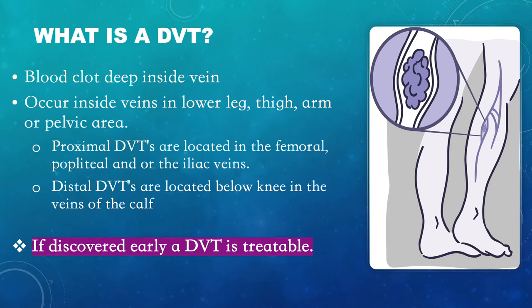If it is not treated, a DVT can dislodge from its site and travel to the lungs, blocking blood flow. This is known as a pulmonary embolism.